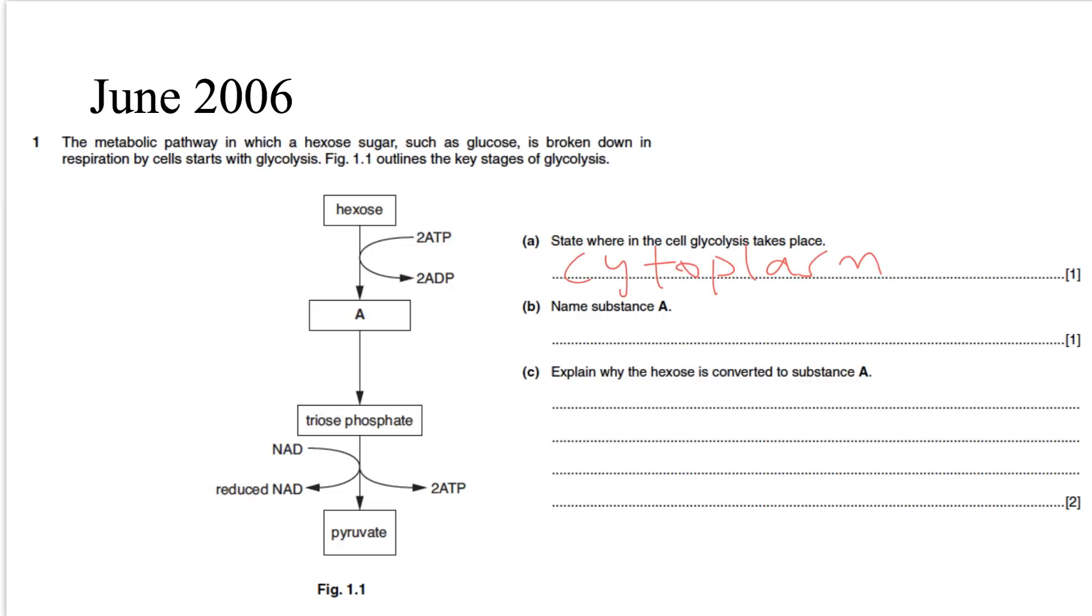B. Name substance A. So let's outline the basic steps again. We have the hexose sugar, which is six carbon, the glucose. And eventually this six carbon sugar splits into two, three carbon sugar, the triose phosphate. So the one in the middle is actually, again, a six carbon sugar, which is a hexose.